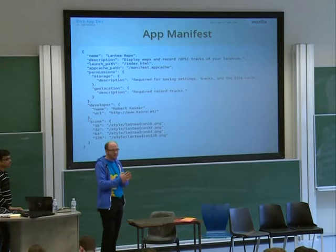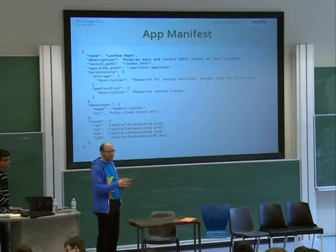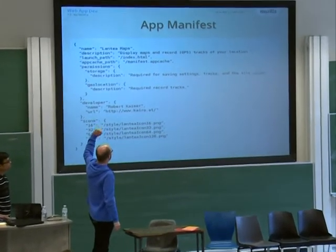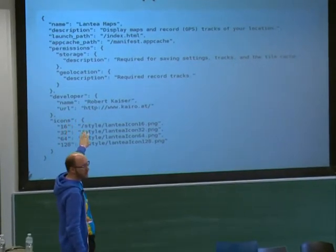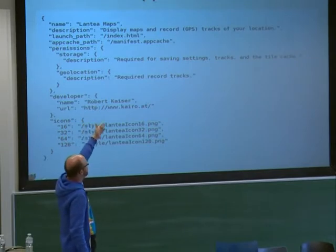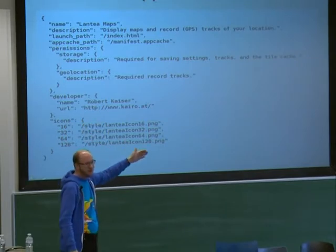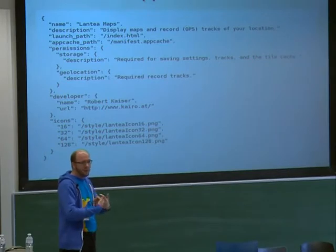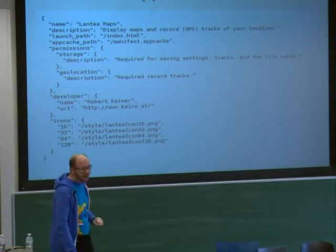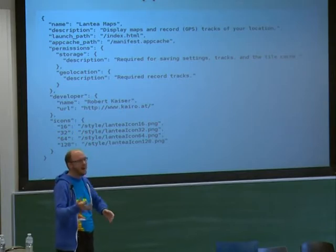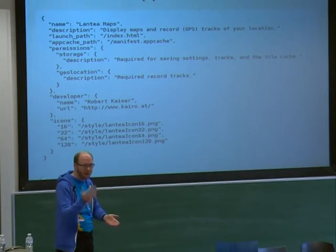If you want to learn more about app cache, there are a lot of resources out there, but it's a bit complicated — I won't go into detail on that. Then you have some permissions that the app needs. In this case, storage and geolocation. This is a map app that displays maps and records GPS tracks, so of course if we want to record a GPS track, we probably want to know your location, so we need a permission for geolocation. And we need a permission for storage so that we can actually save those GPS tracks and cache maps on disk.